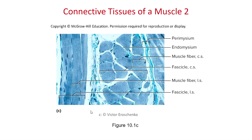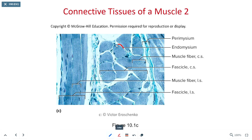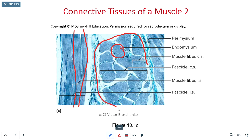Here is a photomicrograph of some skeletal muscle fibers showing us this hierarchy. We have individual skeletal muscle fibers that have been cross-sectionally cut — they appear roughly circular — and here we have longitudinally sliced skeletal muscle fibers. Wrapped around a bundle of these fibers, we have connective tissue membranes forming the fascicle. In between individual fibers, we have the endomysium electrically insulating one skeletal muscle fiber from an adjacent one.